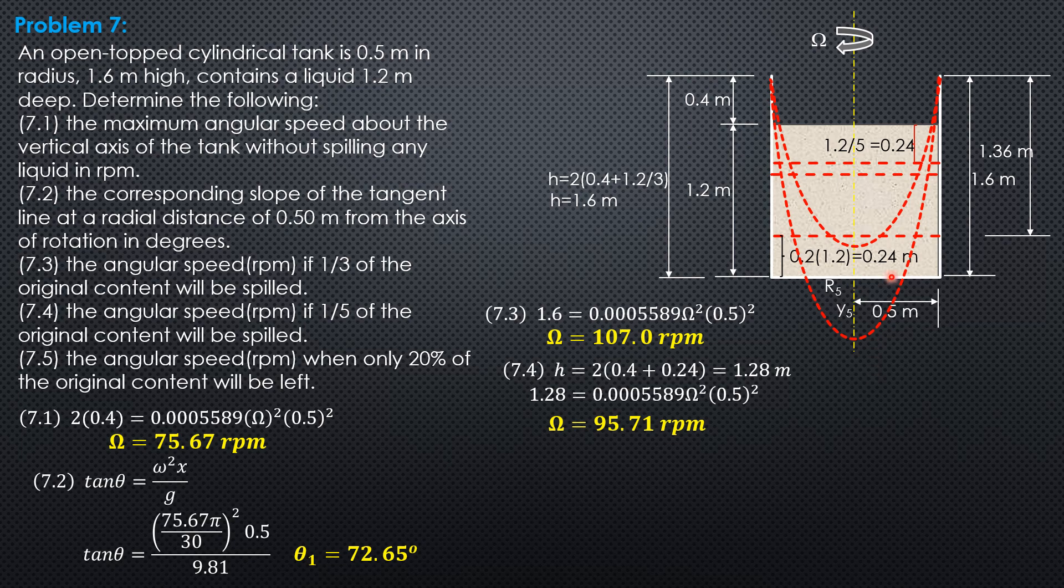Then y5 plus 1.6, that's the total height of the paraboloid before we apply it into this formula. So pi over 2 times 0.5 square plus r5 square times 1.6 equals final volume of air, which is pi 0.5 square times 1.36. So this is the volume of paraboloid of revolutions with two bases. Solving for r5 square, not r5 but r5 square, 0.175 meter square.